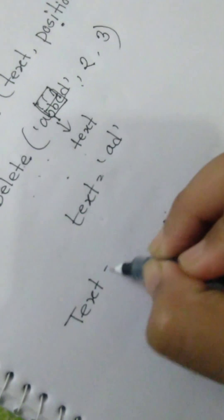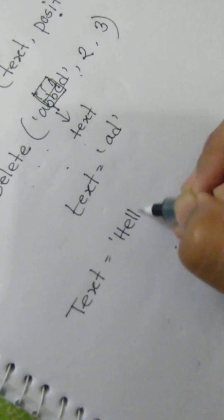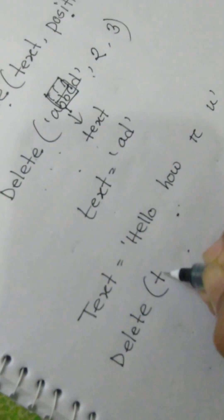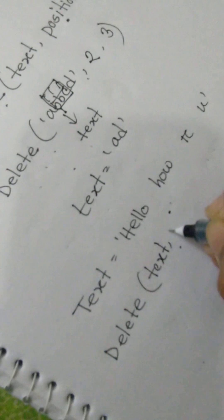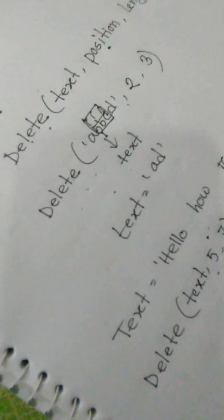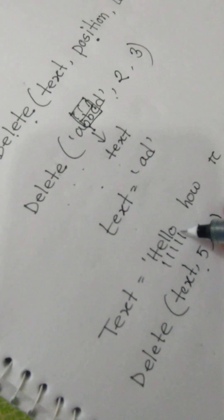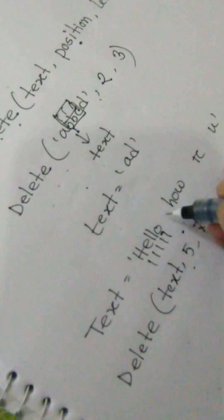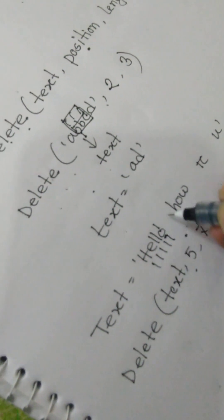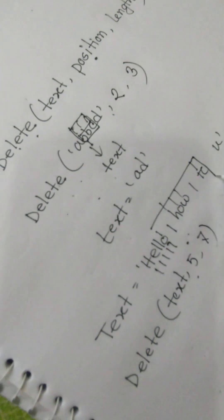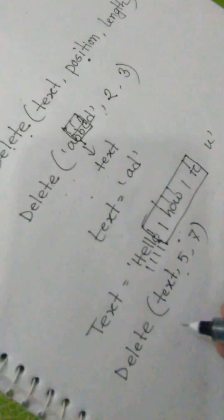Delete text, 5, 2, 7. One, two, three, four, five. From here we have to delete length seven: one, two, three, four, five, six, seven. So we have to delete this portion. That will be, text will be 'hell you'.